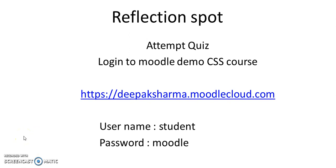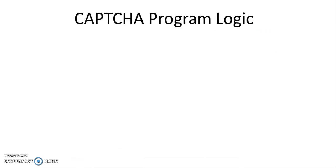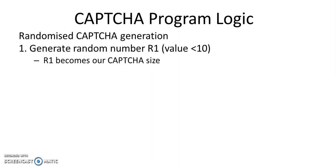So now that you have taken the quiz, let us understand the logic of implementing this CAPTCHA program. As I told you, CAPTCHA is generated in a randomized manner. First we generate a random number R1 with value less than 10, and this R1 becomes our CAPTCHA size.